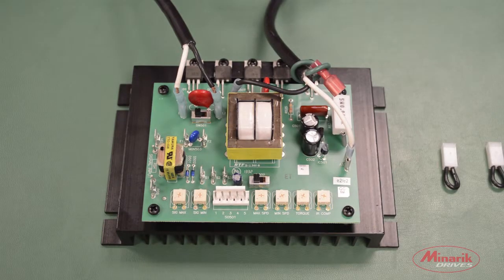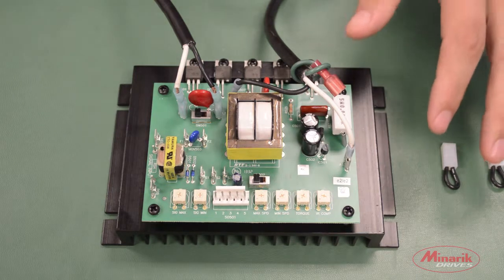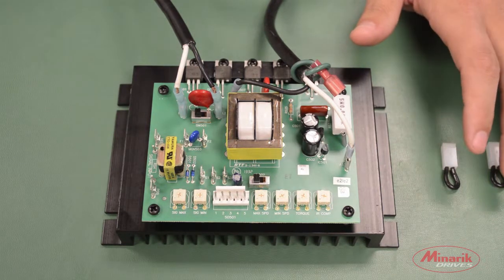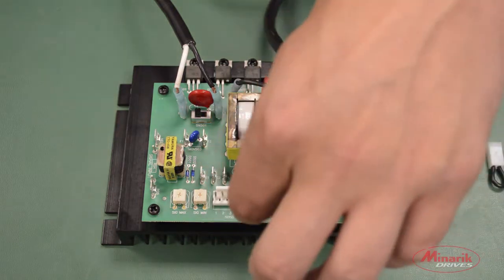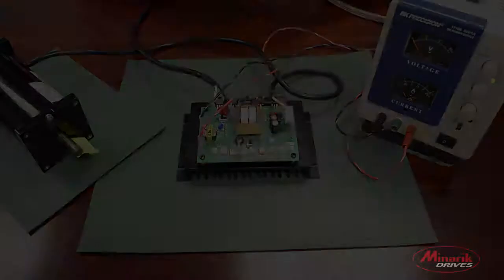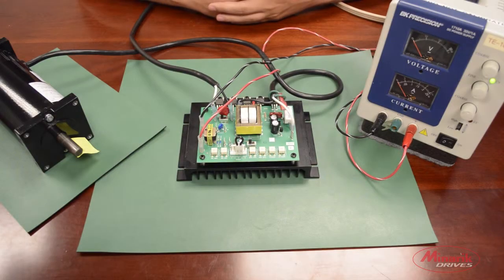The second mode is called signal follower mode. In this mode, the drive will follow a voltage input signal instead of a speed potentiometer. To achieve this mode, you have to short pins 3 and 4 on the mode select header block. Now we will demonstrate the drive in signal follower mode.